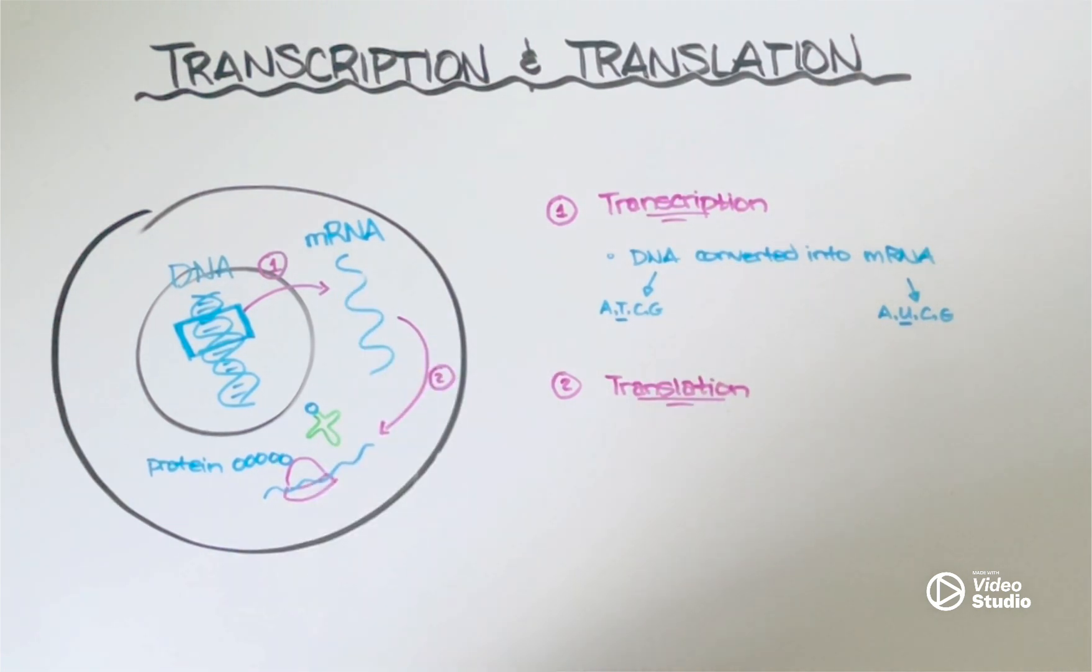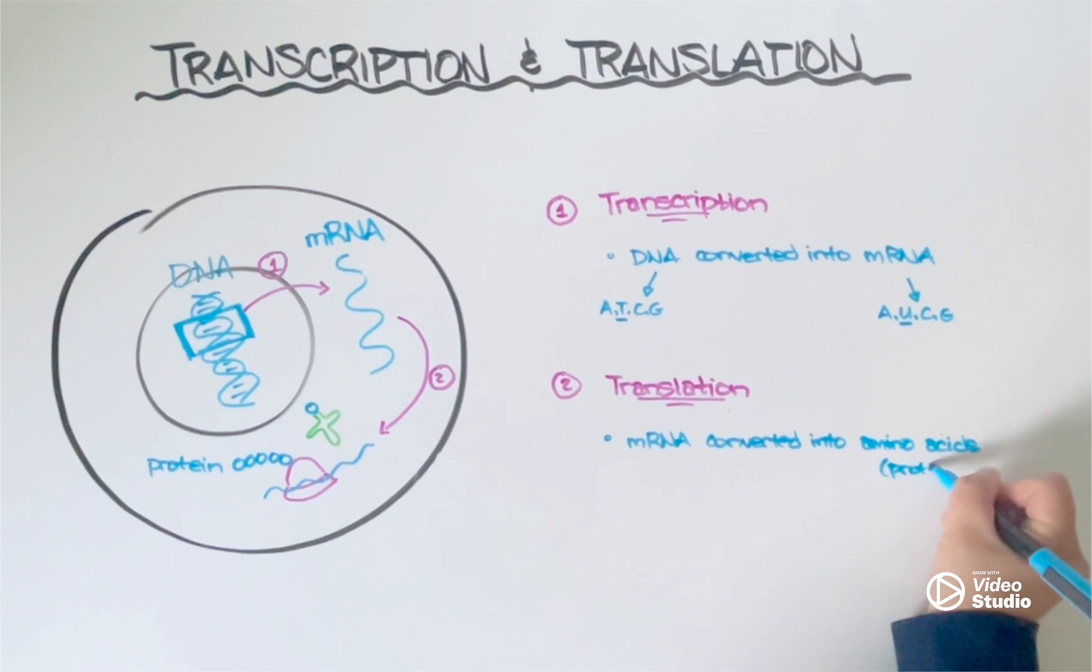Now once the mRNA enters the cytoplasm, it is then going to go and attach to a ribosome. That's this structure I've drawn here in pink. And that's going to initiate the second step in the process known as translation. Translation is going to take that mRNA template and convert it into a chain of amino acids that I've shown here. And those amino acids can undergo some folding to eventually produce a protein. And again, it's that protein that's the end goal because the proteins can actually go and get stuff done in the cell.